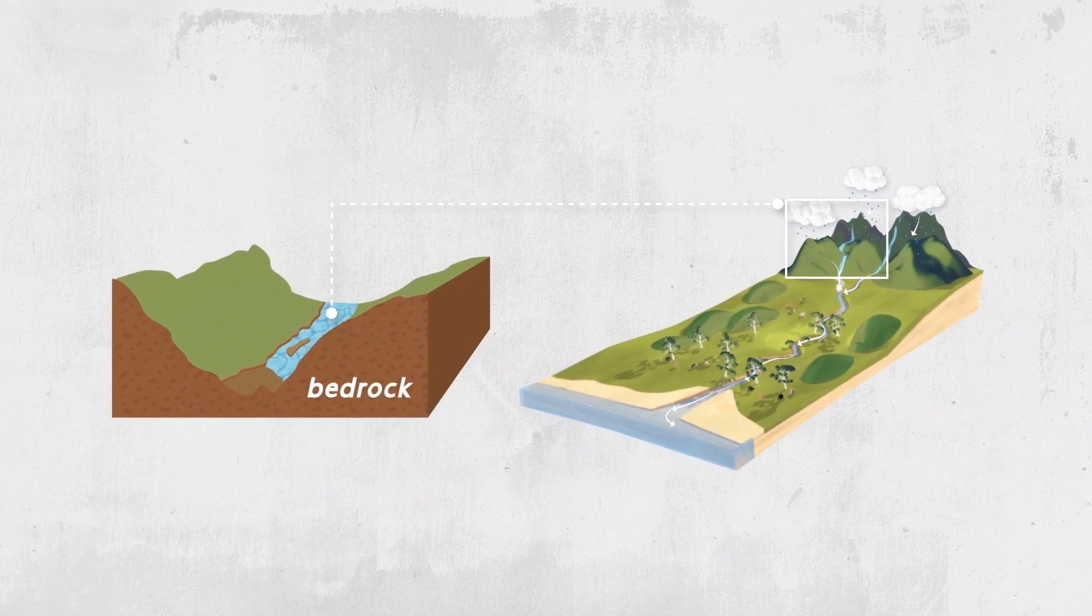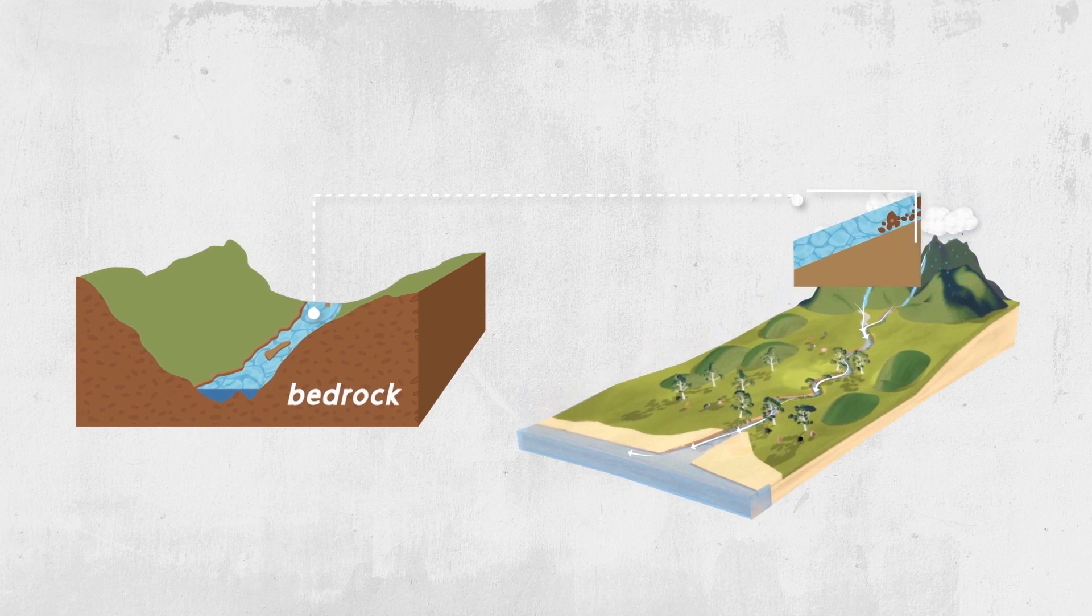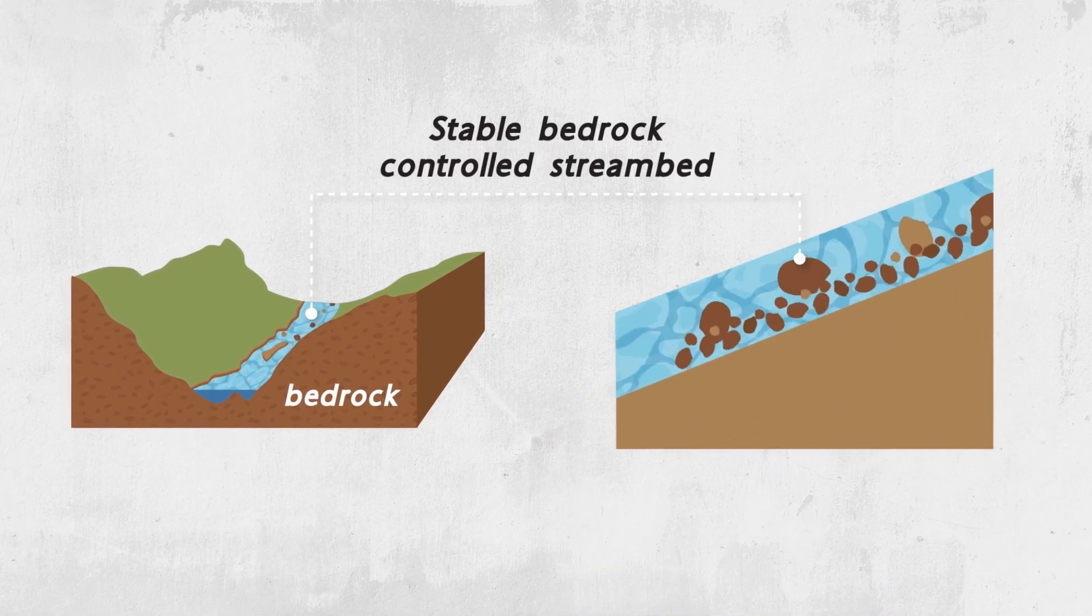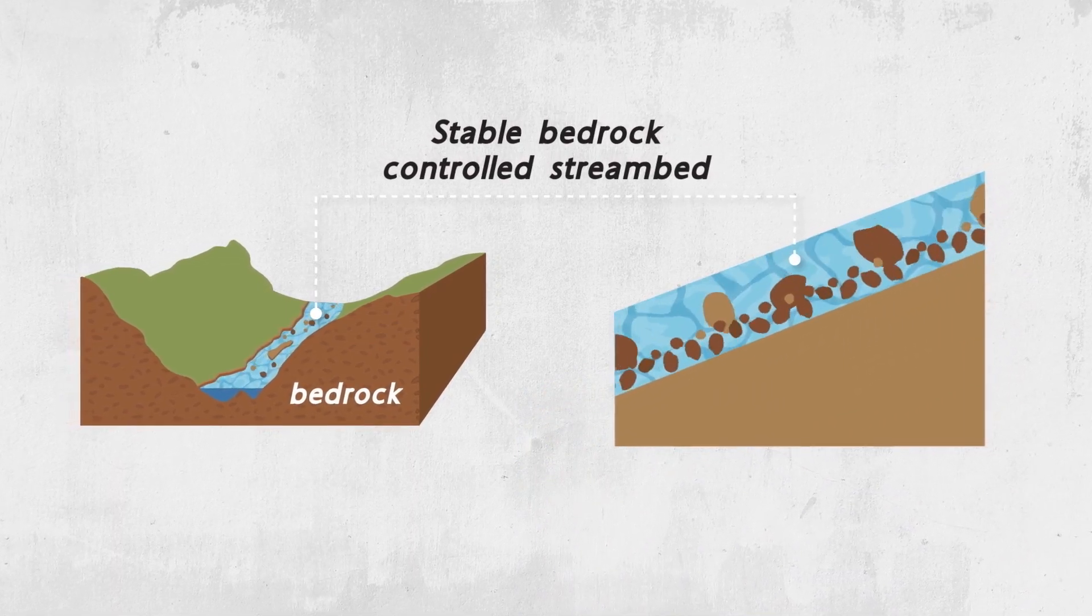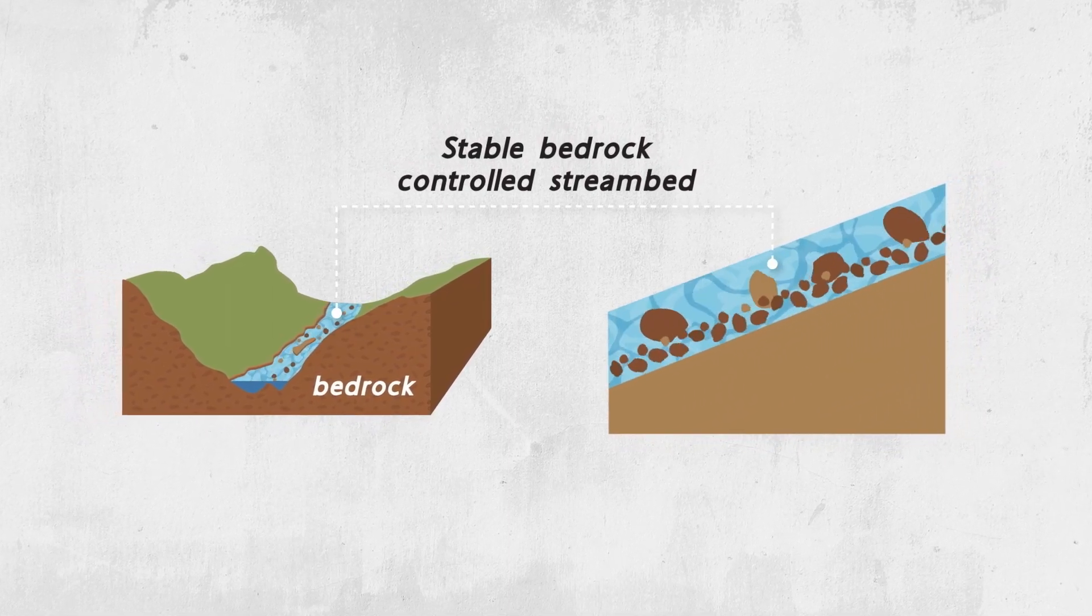Bedrock controlled streams flow through hard bedrock, typically in the upper catchment. Bedrock streams are resistant to erosion, have steep slopes which transport water and eroded sediments downstream in fast torrents.